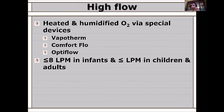High flow requires heated humidified oxygen. It is not mandatory for low or micro flow, but above 2 L/min always consider heating and humidification. Devices for high flow include the Vapotherm, Comfort Flow, and OptiFlow. For infants, use less than 8 L/min; for children and adults, up to 60 L/min can be used. High flow is indicated in respiratory distress or respiratory failure requiring more than 30% oxygen.